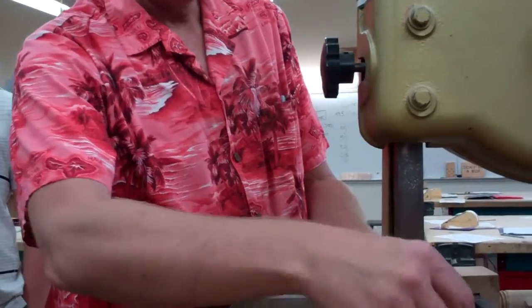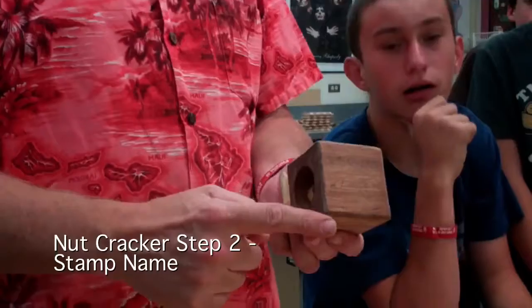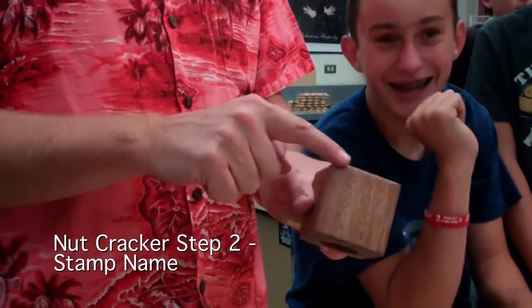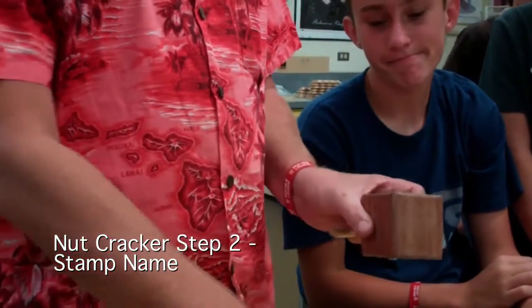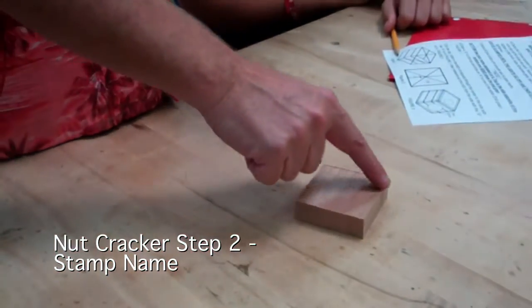Then, once it is stopped, you take these three pieces. Eventually, we're going to carve or sand part of the edges away, so you don't want to stamp your name around the outer edge.